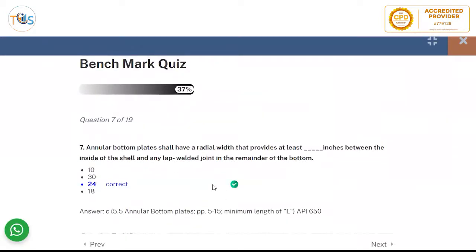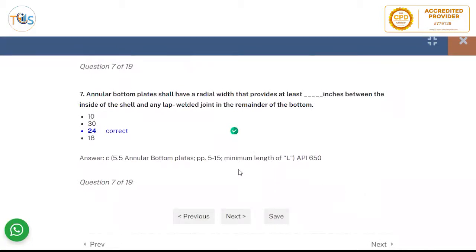Annular bottom plates shall have a radial width that provides at least 24 inches between the inside of the shell and any lap welded joint in the remainder of the bottom. Because the critical joint, and this is coming from the formula API 650. So whatever you have calculated on that formula, it can be less than 24 inch. That's a cap.